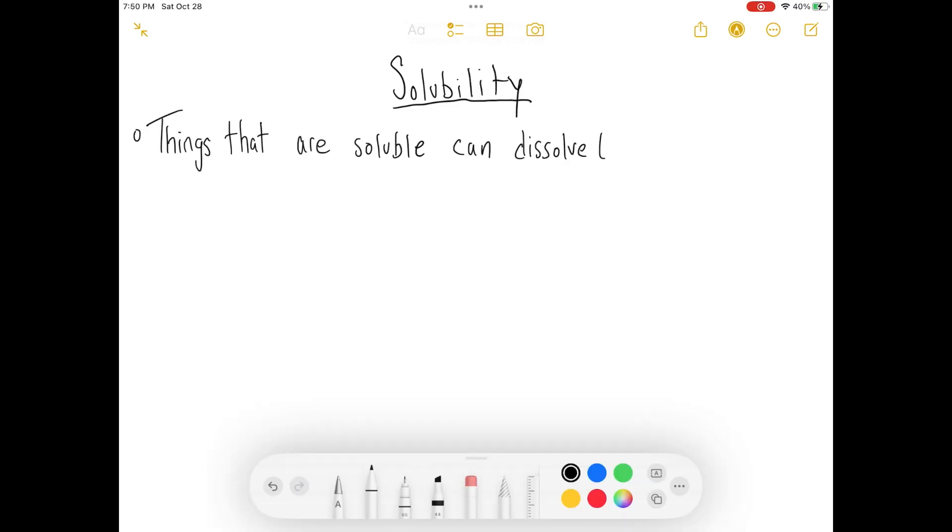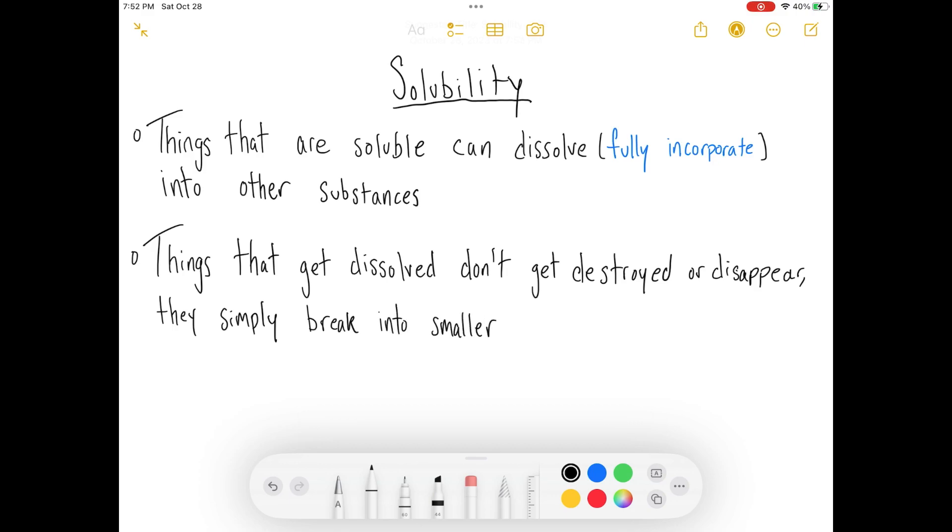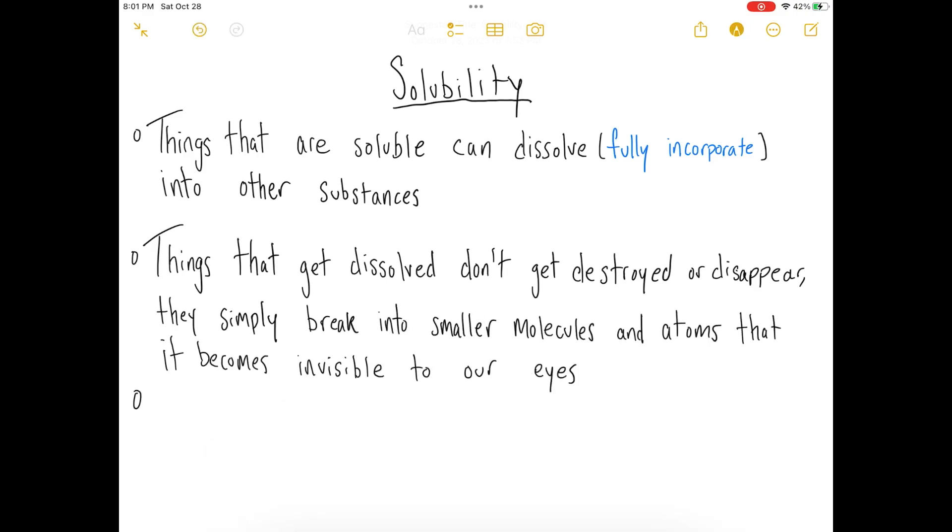Solubility is the final physical property that we will be discussing. And basically, it's something that has the ability to get dissolved or fully incorporated into something else. Now, when something gets dissolved into something else, it's not saying that it's getting destroyed or disappearing. It basically that thing is becoming so small that it becomes invisible to our eyes.